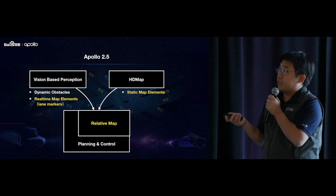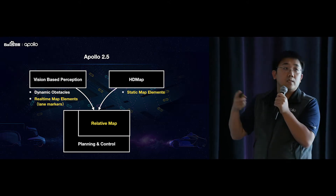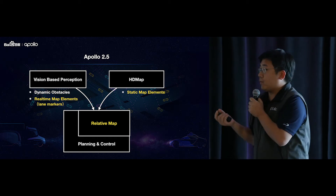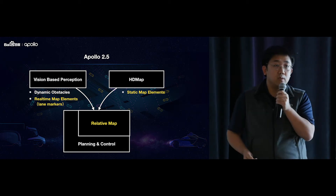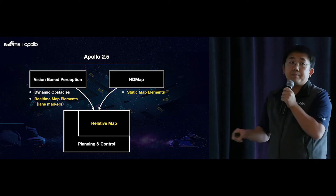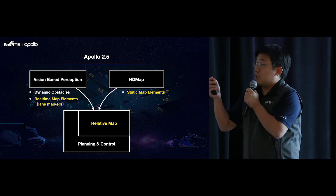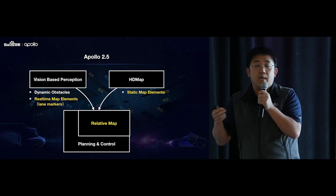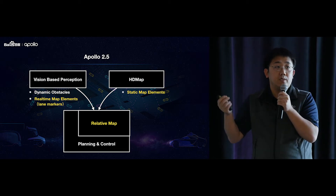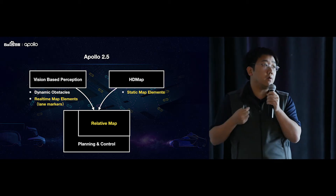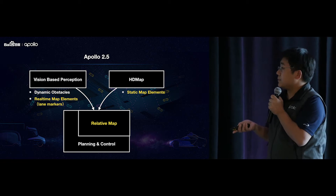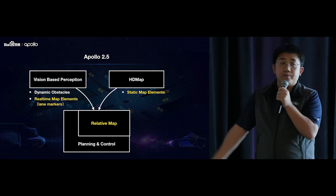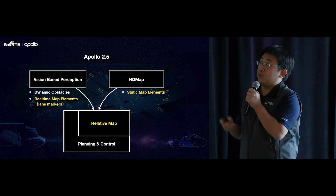This module takes map elements from either perception, HD map, or a combination of both, to provide relative map data to planning and control. The relative map data means the coordinates of all map elements are relative to the vehicle — the vehicle is always at position (0,0) and its heading is always zero. That's why we introduced this relative map module in Apollo 2.5.